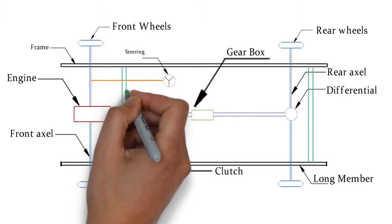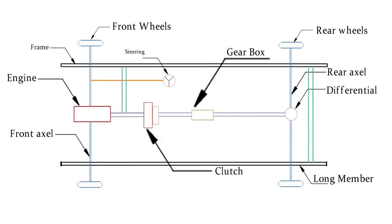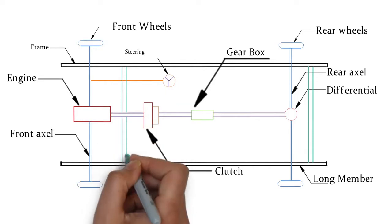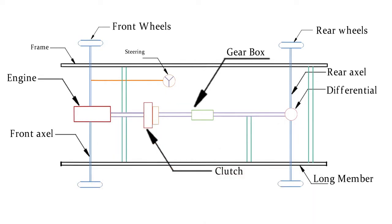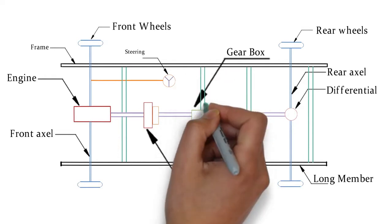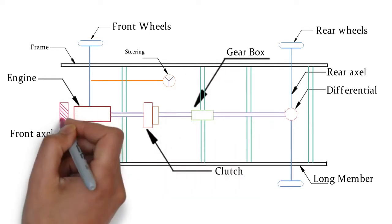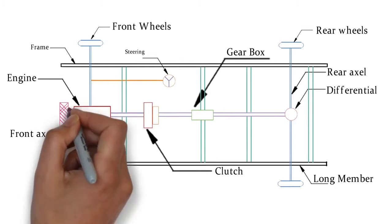Braking system, it is fitted on the vehicle so that the moving vehicle can be stopped as and when required by the driver. Electrical system, it provides the illumination in the night for safe driving as well as for running other units such as wiper machine, ignition system, music systems, etc.